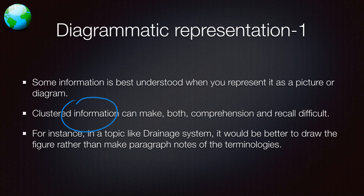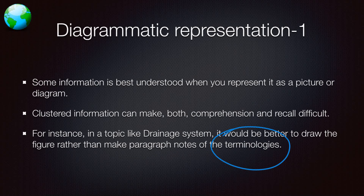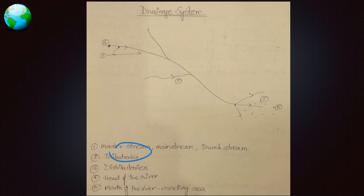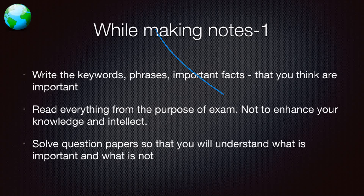Clustered information makes comprehension and recall difficult. For example, for a drainage system, it is better to draw the figure rather than write paragraph notes. In a typical river diagram — say the Ganga — label: one, the master stream or trunk stream; two, the tributaries; three, the distributaries; four, the head of the river; and five, the mouth of the river meeting the sea. This format works for any river: Brahmaputra, Yamuna, Kaveri, Krishna, Godavari, etc.